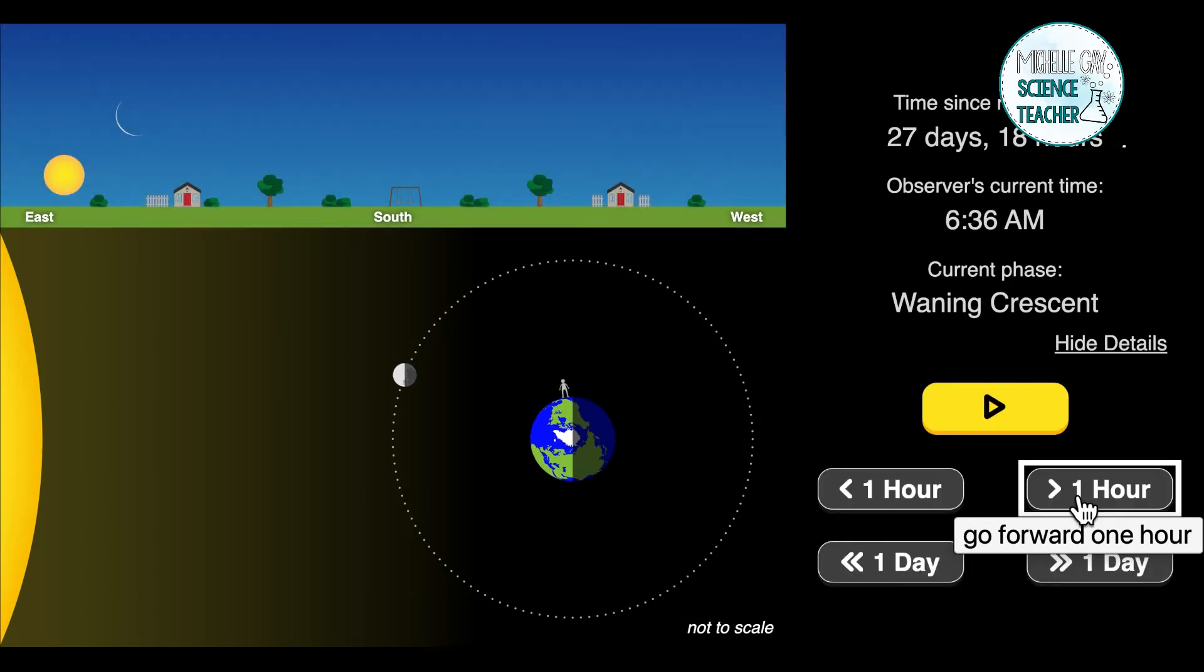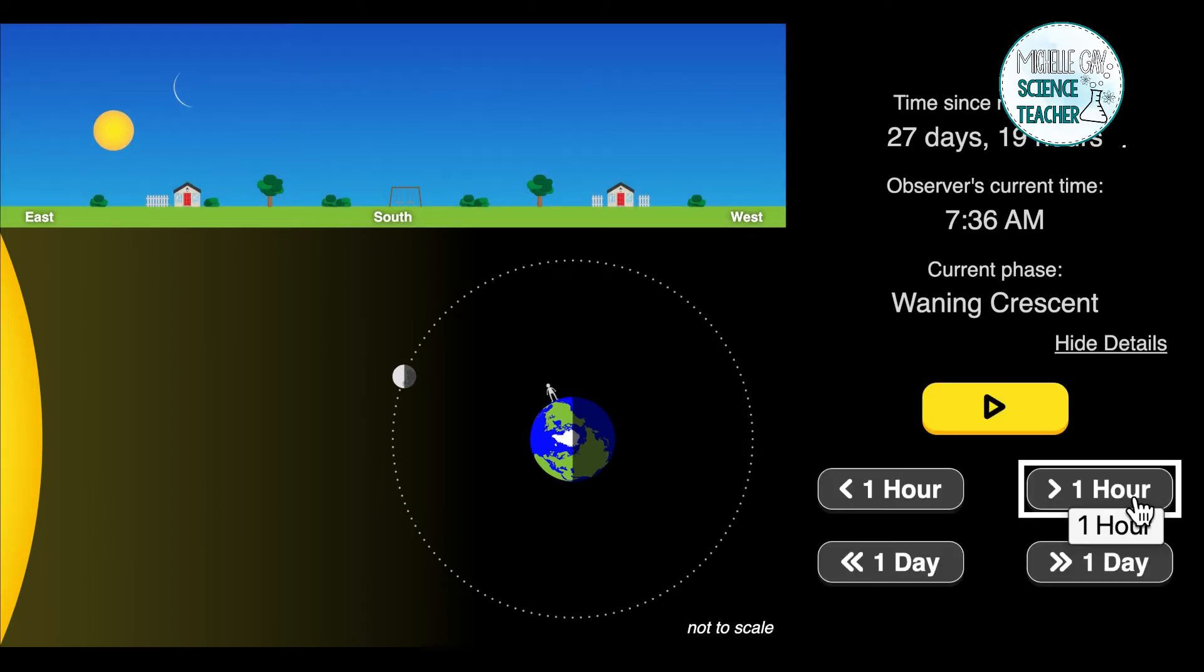Look at the moon. We have a small sliver, we still have a waning crescent as it continues. The moon is disappearing because it's moving into the new moon.